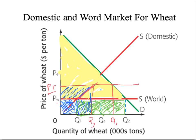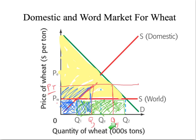There'd be a drop in the demand for U.S. wheat because this many consumers here are no longer willing to pay the tariff price of wheat, and so they're pushed out of the marketplace. So the new quantity transacted in the market — quantity demanded — will be Q4.